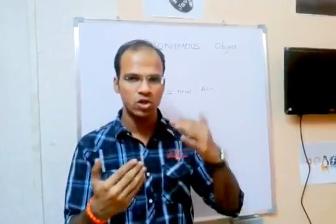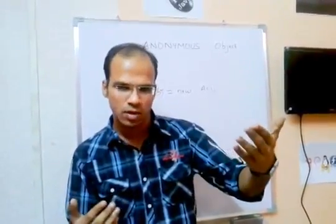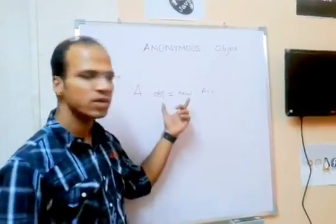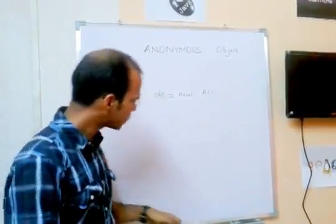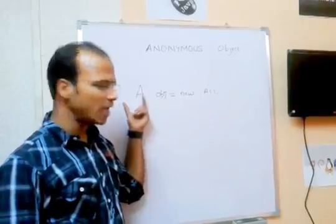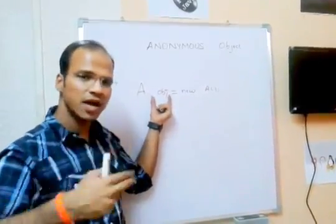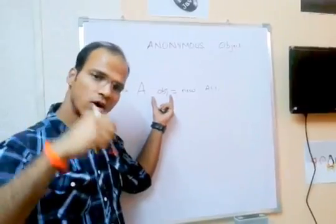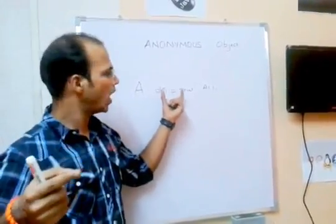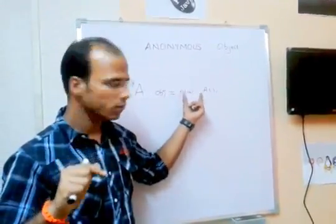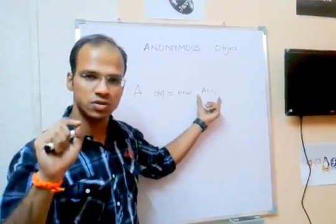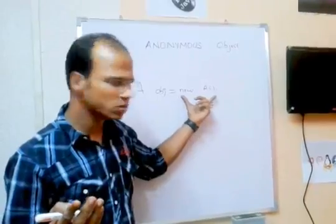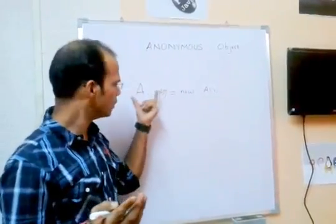You require an object's name when you want to use it many times. But if you want to use an object only one time, you can define an anonymous object. When I write 'A obj', I'm creating a reference of class A with the name obj. When I want to convert obj into an object, I assign memory using a constructor — that's creating the object.